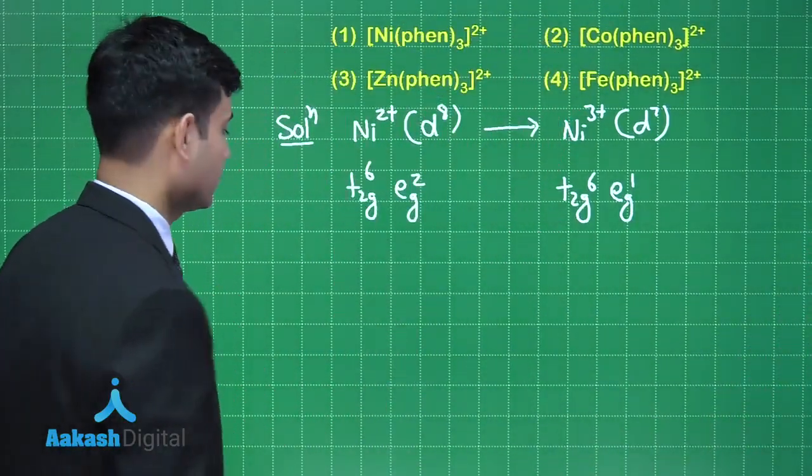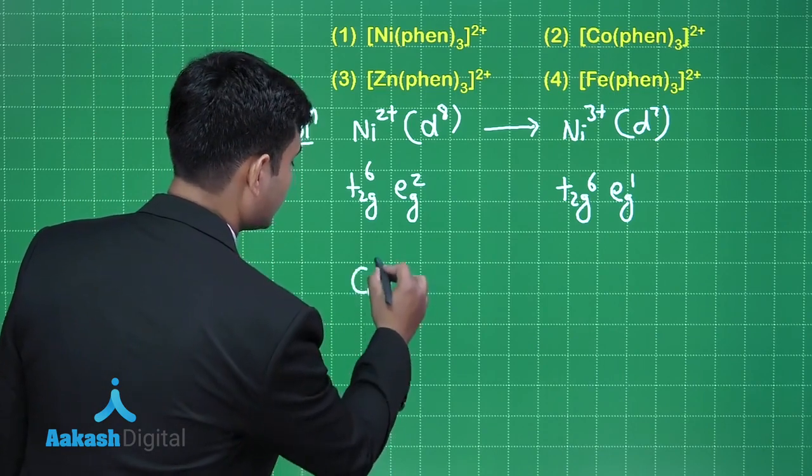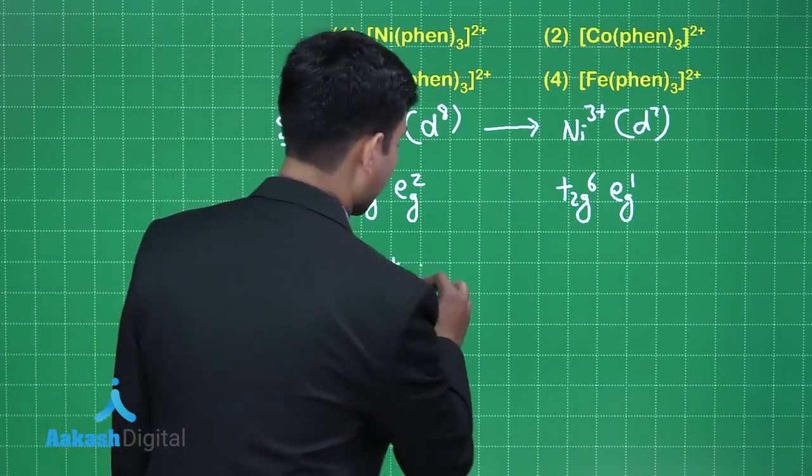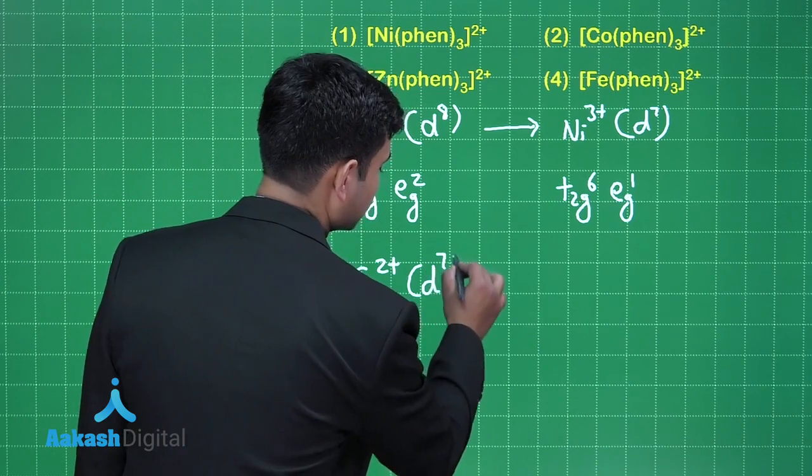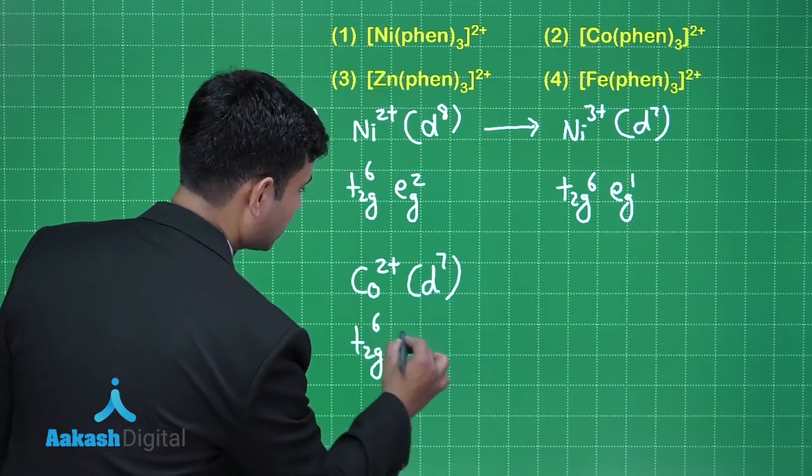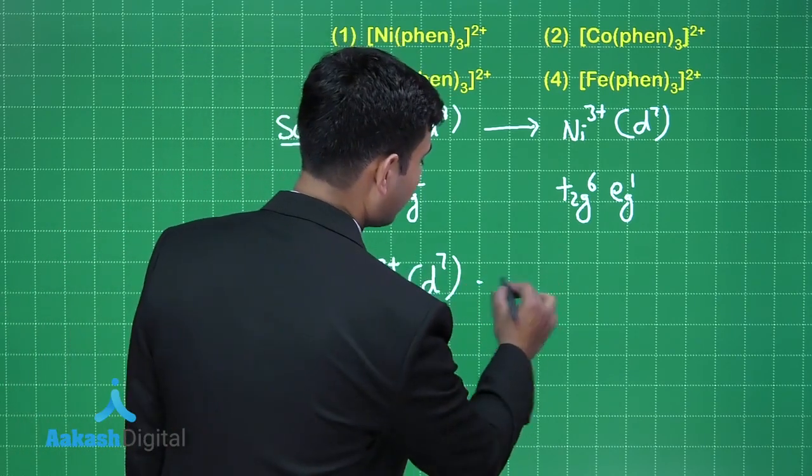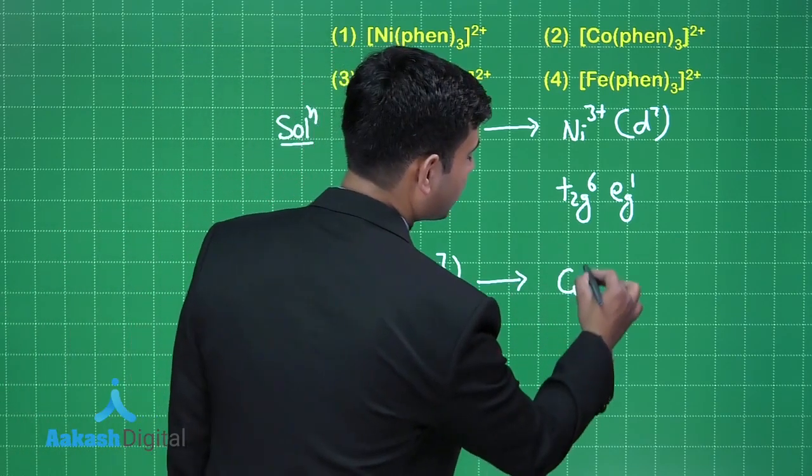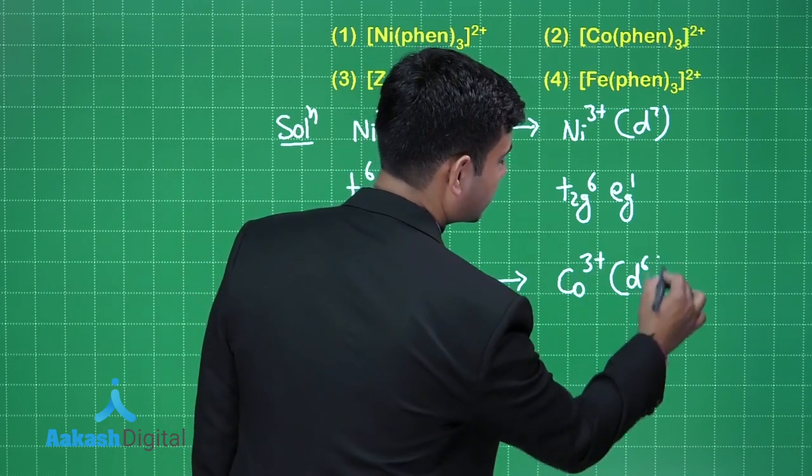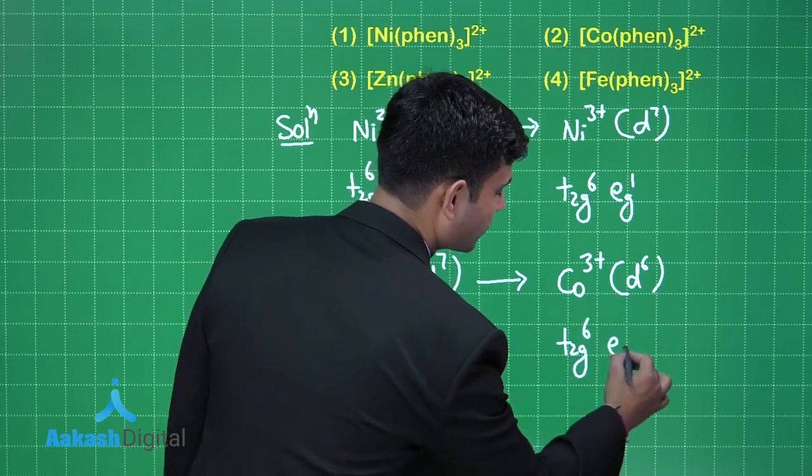The second option is Co2+. Co2+ will have d7 configuration which is t2g6 eg1. Now if it oxidizes to Co3+ it will have d6 configuration which is t2g6 eg0.